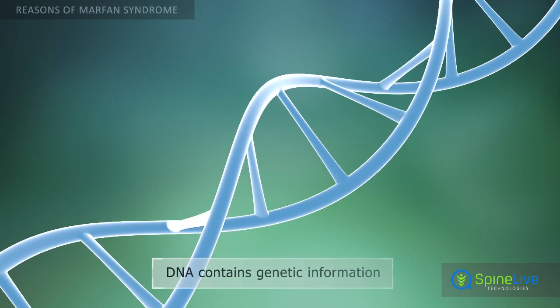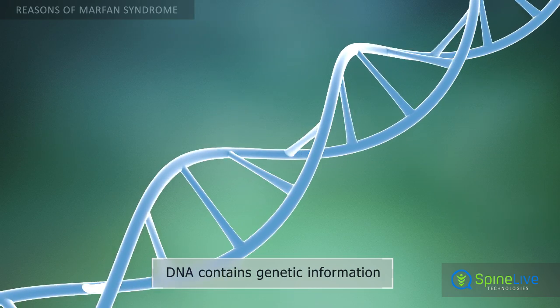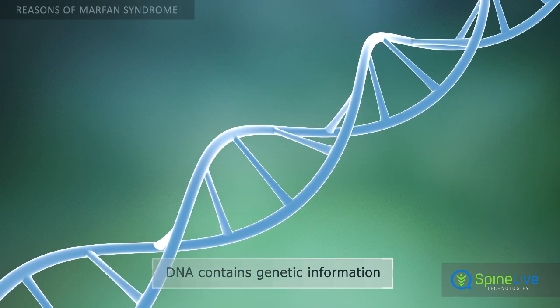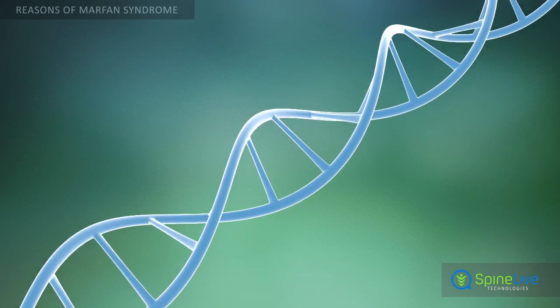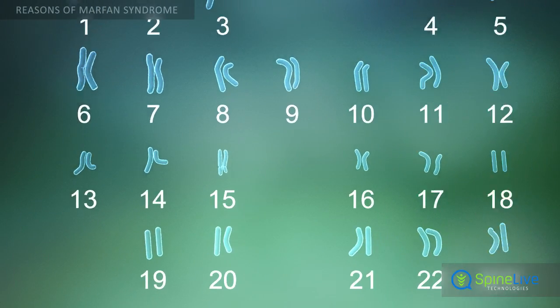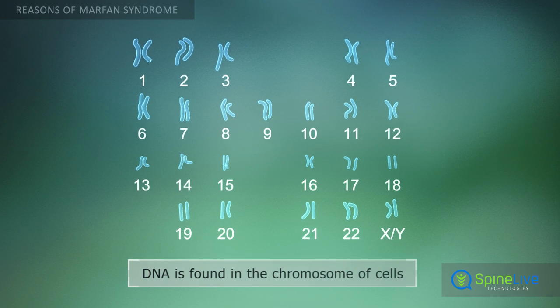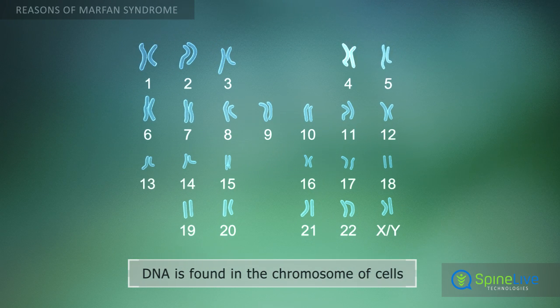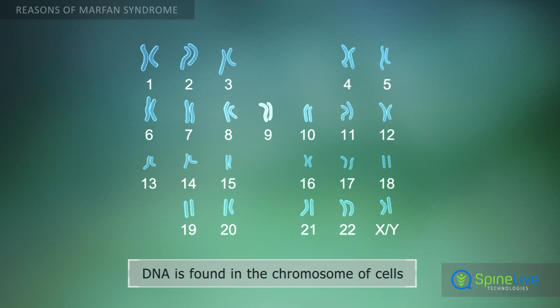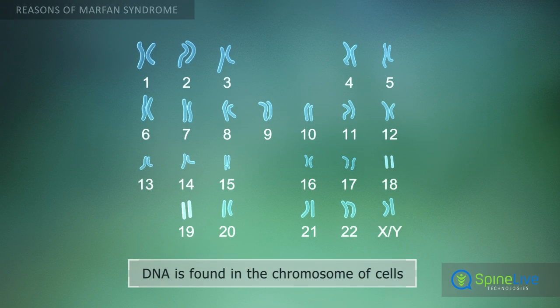The DNA contains genetic information about the structure of proteins in the human body. It is packed in chromosomes inside the cell nucleus. Normal human cells have 23 pairs of chromosomes.